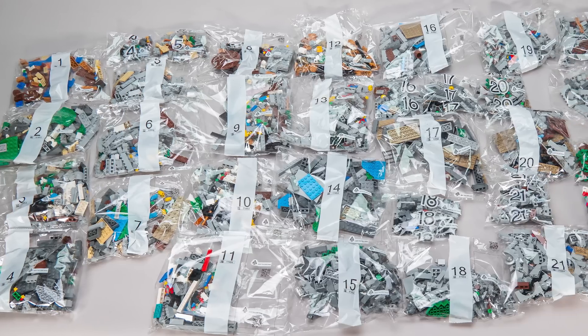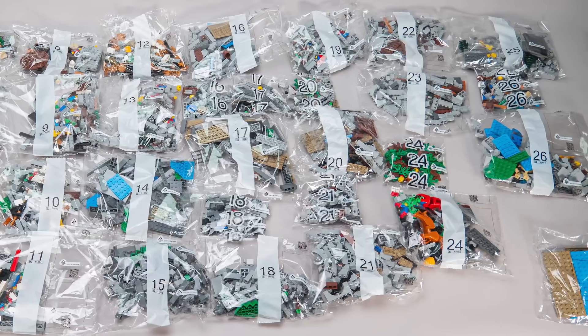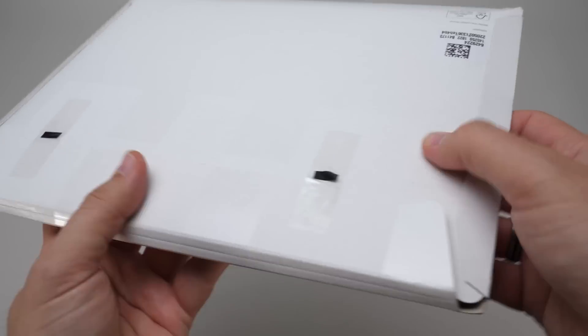There are 35 numbered bags inside the two boxes, with 26 building phases, and an unnumbered one with mostly plates. The manual is in a paper bag, which is nice, but it's quite big and heavy, seems to be at the upper limit of the paper bag's capacity.